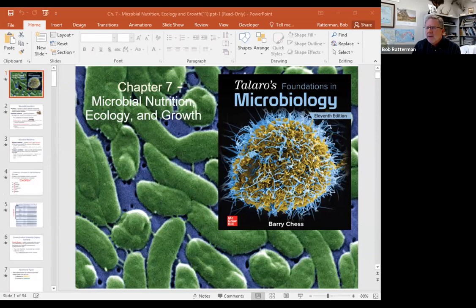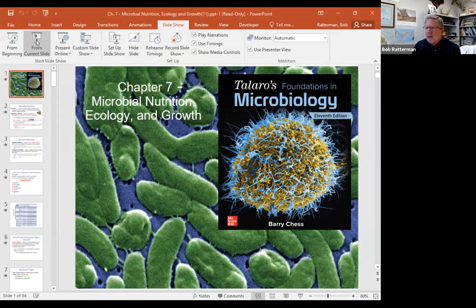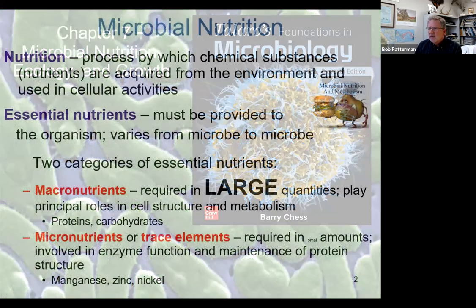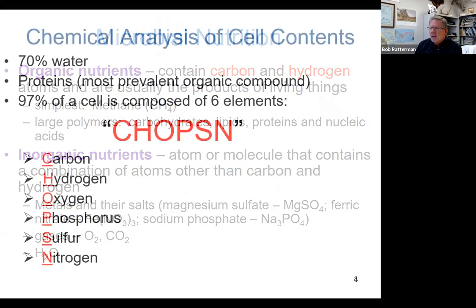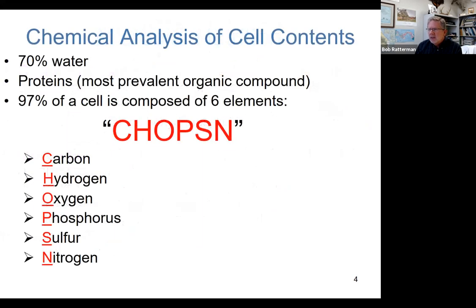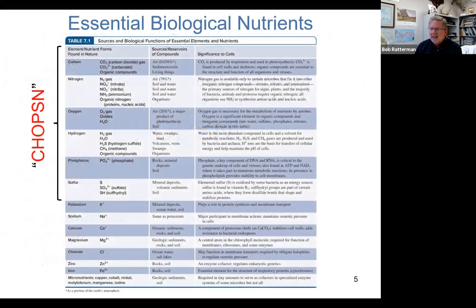Now chapter seven. Here we get into different aspects of growth and ecology. We talked about the nutrition of microbes and described the major elements found in most all living cells, including bacteria. This listing of six elements is the same for you and me as it is for E. coli in our gut — CHOPSIN, the acronym I use to help remember it.